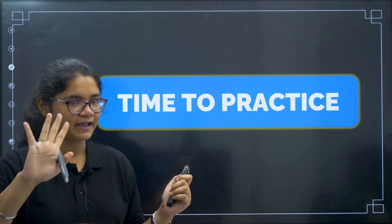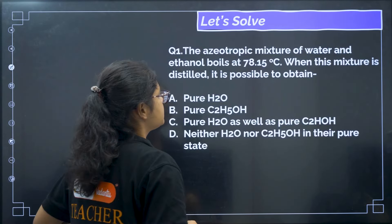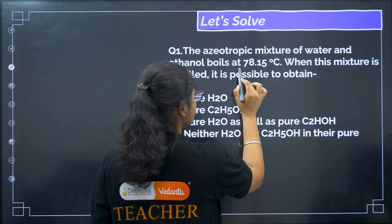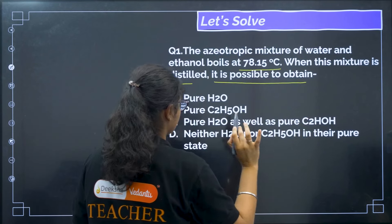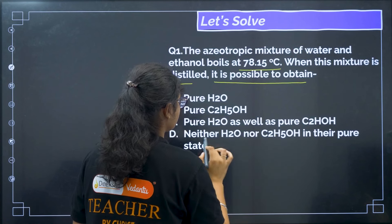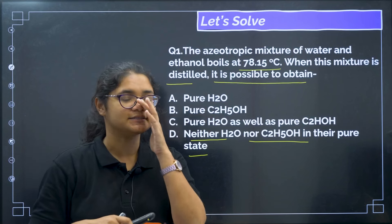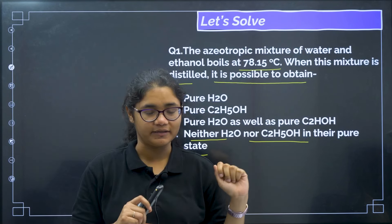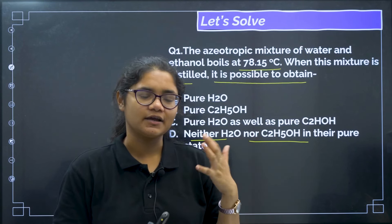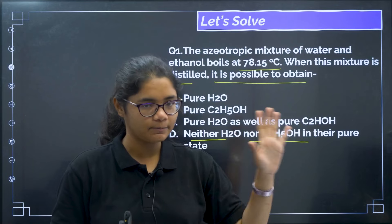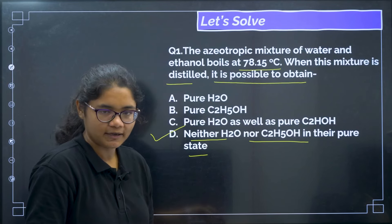Now let us practice questions. The azeotropic mixture of water and ethanol boils at 78.15°C. When this mixture is distilled, can we obtain pure water, pure ethanol, both, or neither in their pure state? Since they boil at the same temperature they cannot be separated, so the correct answer is option D — neither water nor ethanol in their pure state.